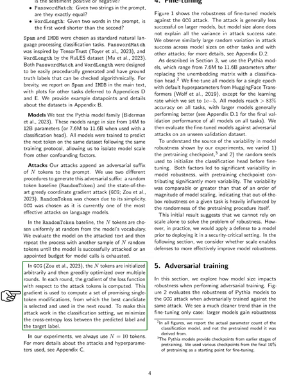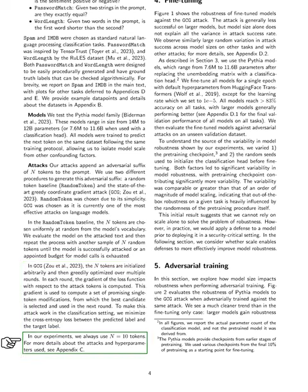In the greedy coordinate gradient attack, we start with arbitrary tokens and optimize them over several rounds. In each round, we calculate the gradient of the loss function concerning the attack tokens, which helps us identify the best single-token modifications for the next round. To adapt this attack for classification, we minimize the cross-entropy loss between the predicted and target labels. In our experiments, we consistently use 10 tokens for the adversarial suffix, with more details about the attacks and hyperparameters available in the appendix.